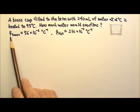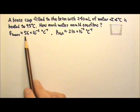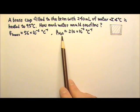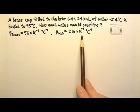The coefficient of volume expansion beta for brass is 56 times 10 to the negative 6. The beta for water is 210 times 10 to the negative 6.